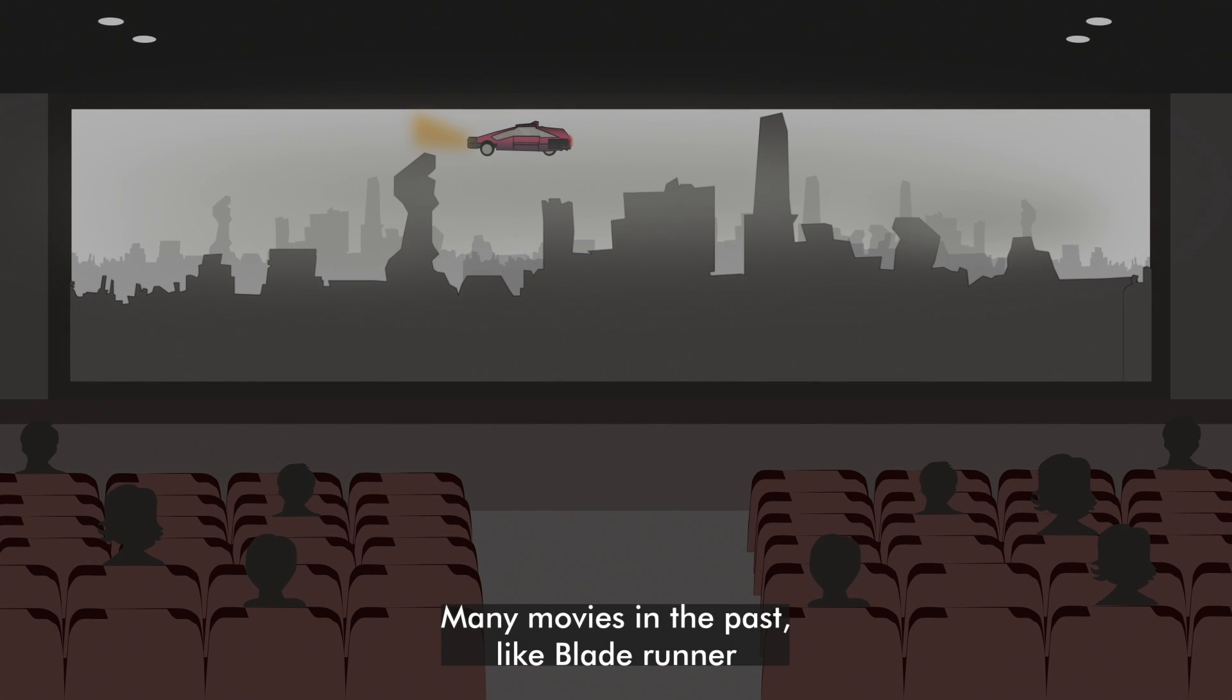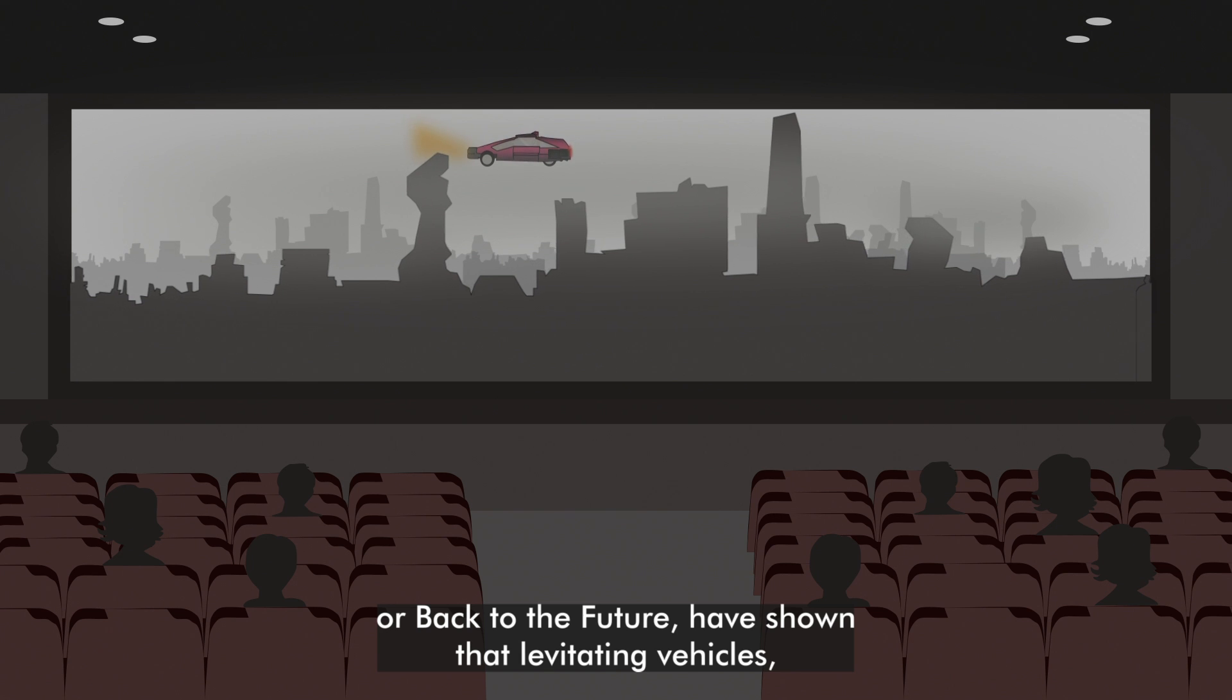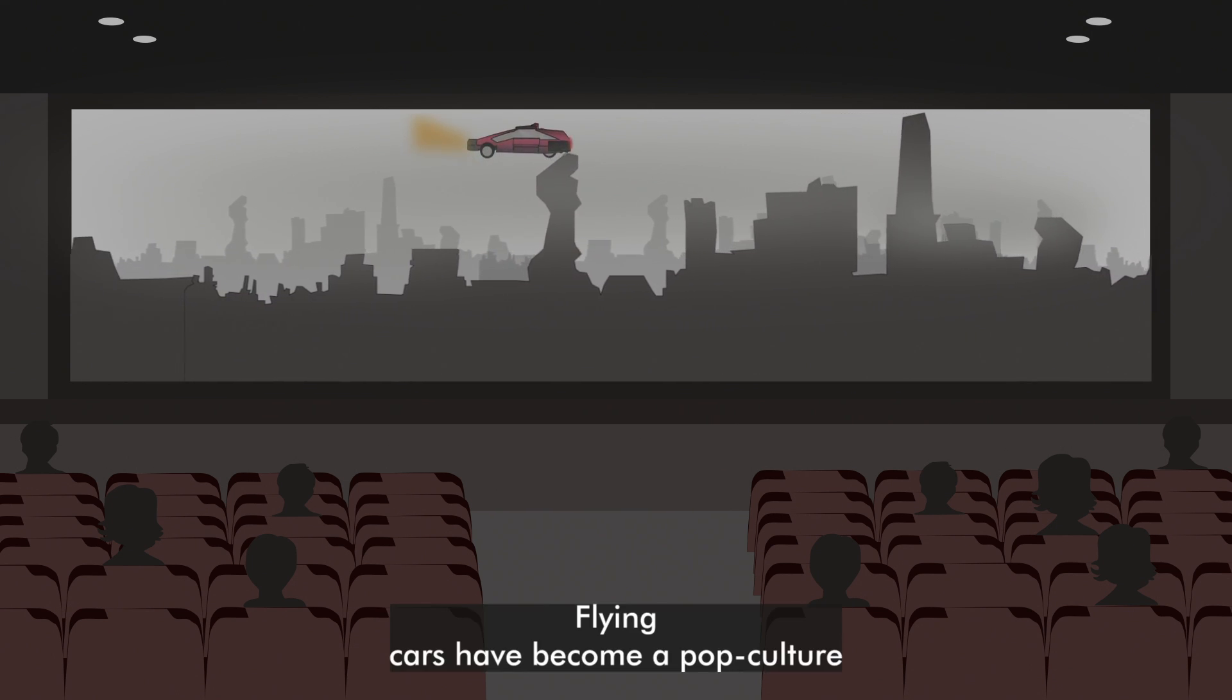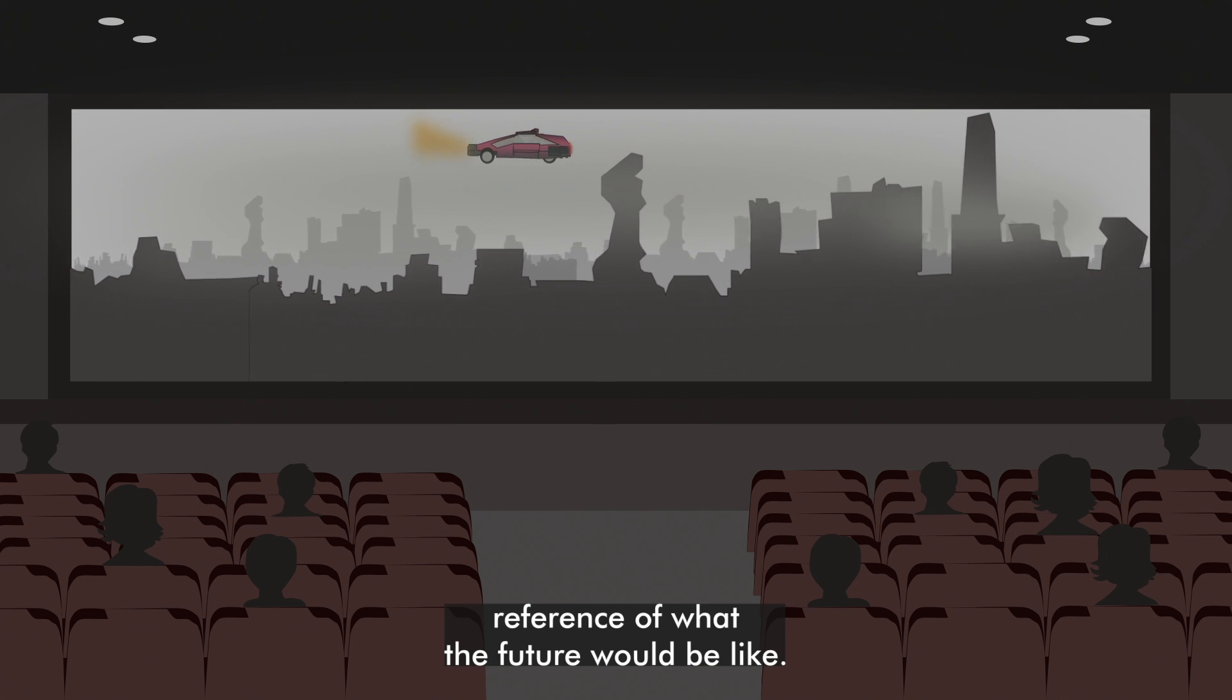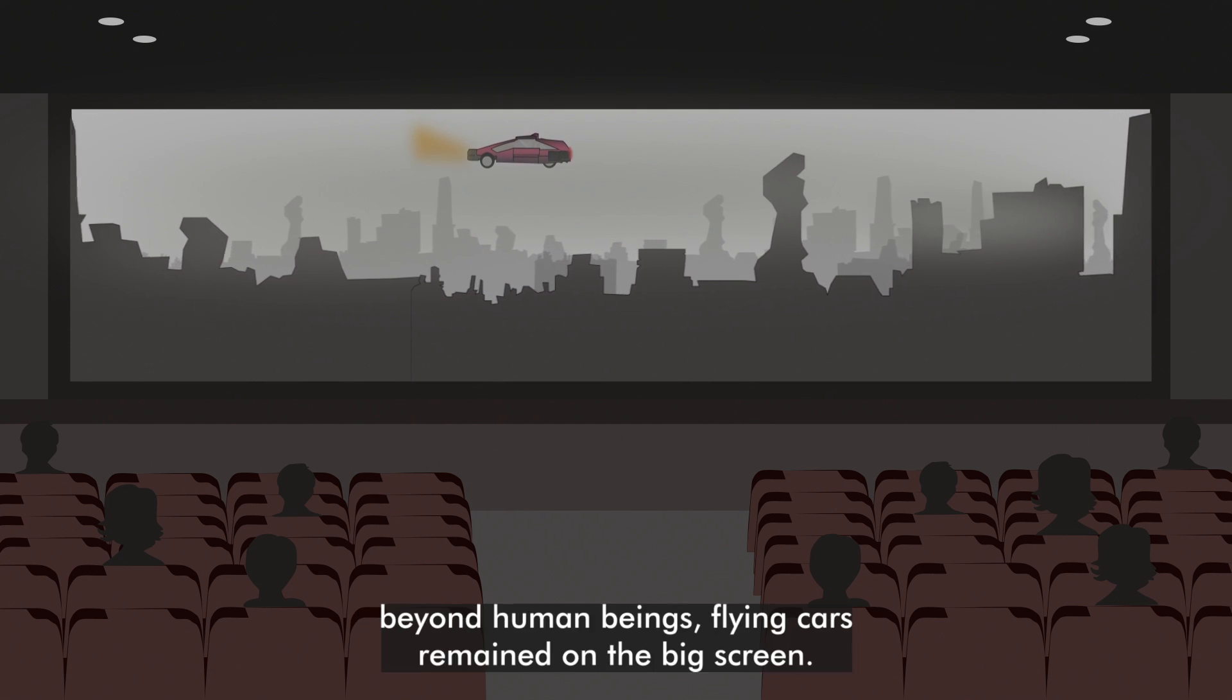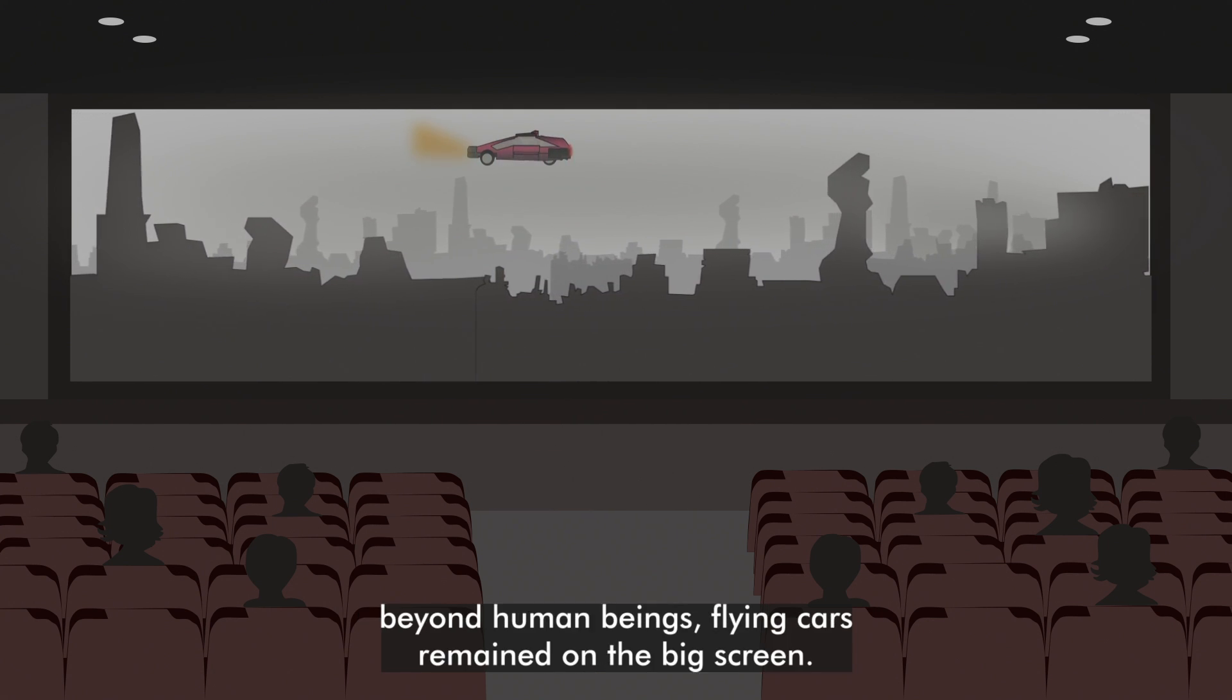Many movies in the past like Blade Runner or Back to the Future have shown levitating vehicles. Flying cars have become a pop culture reference of what the future would be like. Though years passed and technology advanced beyond human dreams, flying cars remained on the big screen.